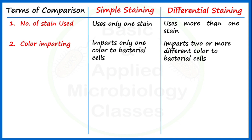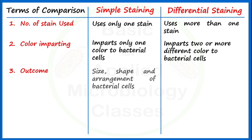The third point of difference is outcome. Simple staining helps us to determine the size, shape, and arrangement of bacterial cells. Whatever bacterial culture we are examining, we can determine the shape of bacterial cells — whether they are cocci (circular or round shape), rod-shaped bacilli, or any other shape — after performing simple staining.